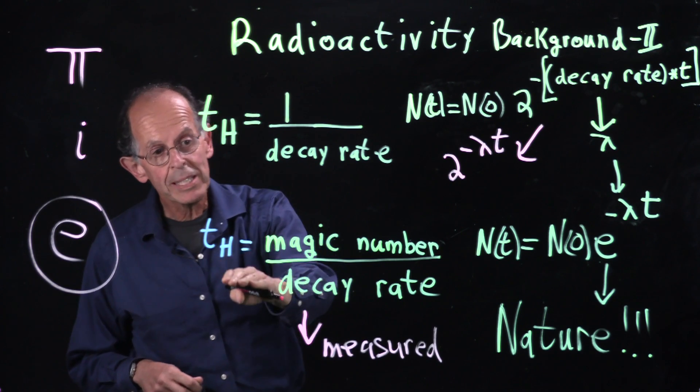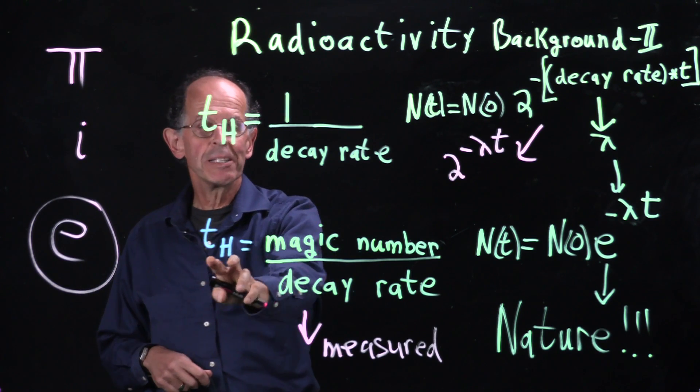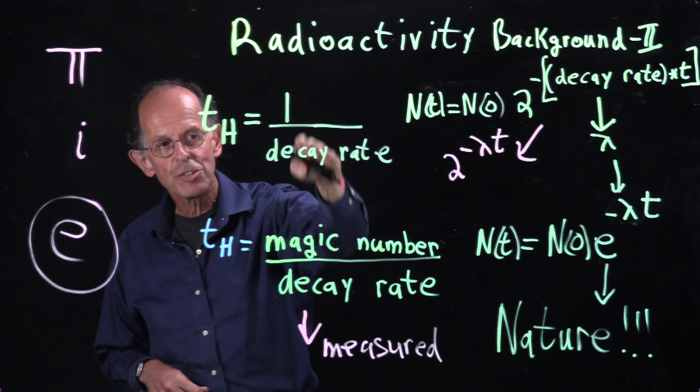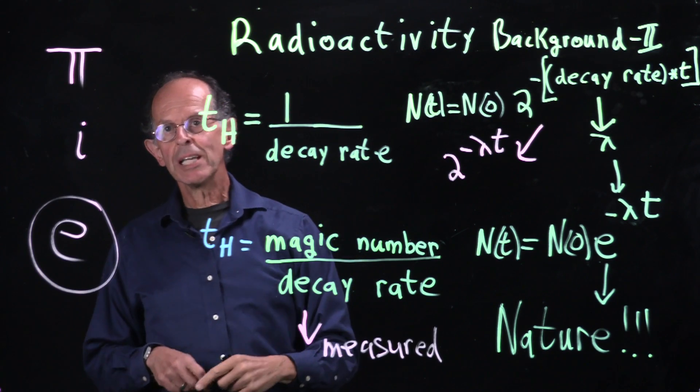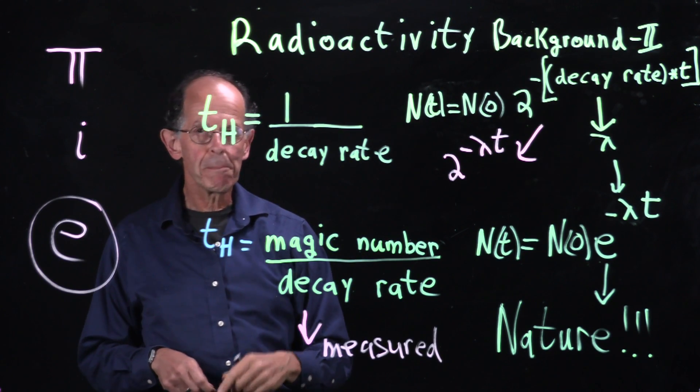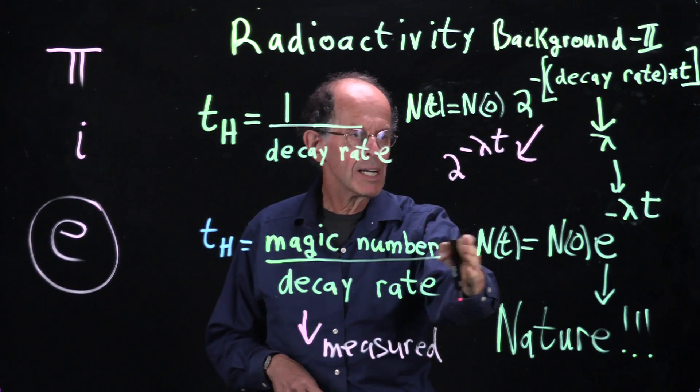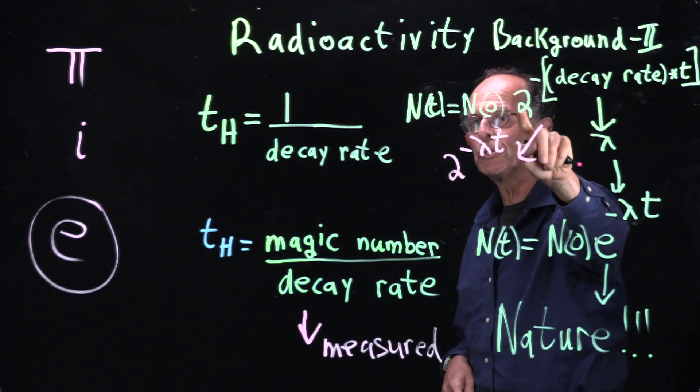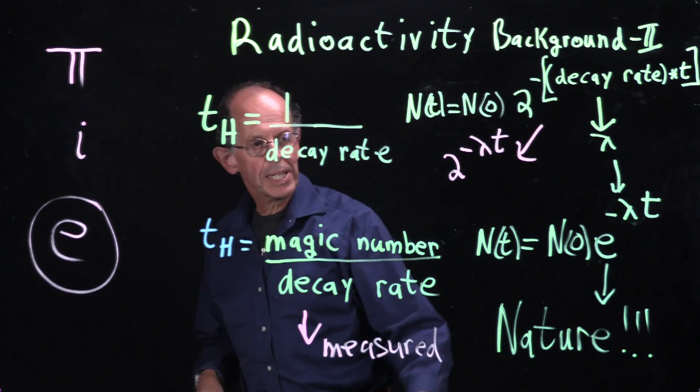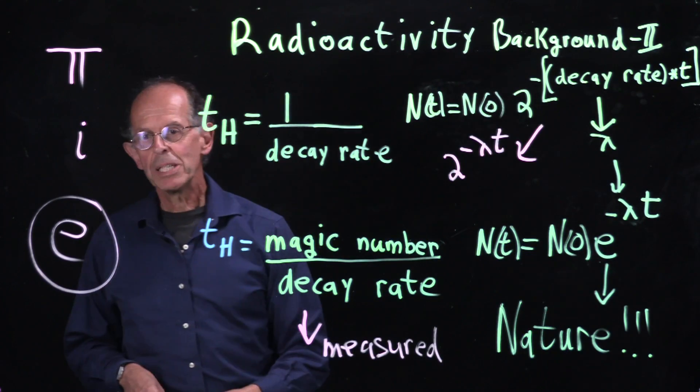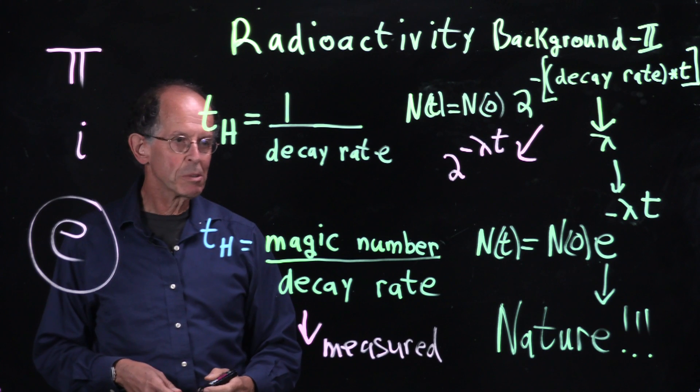Now, in the real world, our half-life is basically the same with a magic number on top. The magic number on top is because we don't have 2 here, we have e, because e is the natural growth rate.